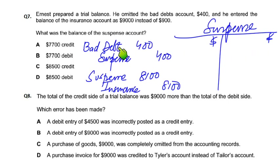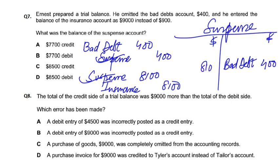For the first entry: bad debt debit means suspense credit — suspense credit $400, reference bad debt. For the second entry: suspense debit $8,100, reference insurance.